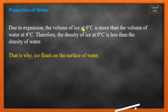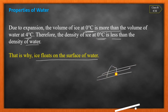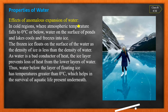Due to expansion, the volume of ice at zero degrees Celsius is more than the volume of water at four degrees Celsius. Therefore the density of ice at zero degrees is less than the density of water at four degrees. That is why ice floats on the surface of water — because ice has less density than water.